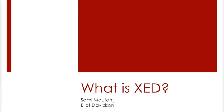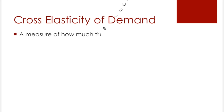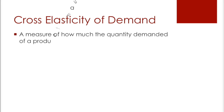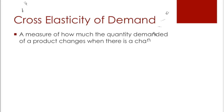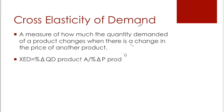Hi, I'm Elian and this is Sammy and we're going to look at what is XED. XED is short for Cross Elasticity of Demand, which is a measure of how much the quantity demanded of a product changes when there is a change in the price of another product. This is calculated by dividing the percentage change in quantity demanded of one product with the percentage change in price of another product.